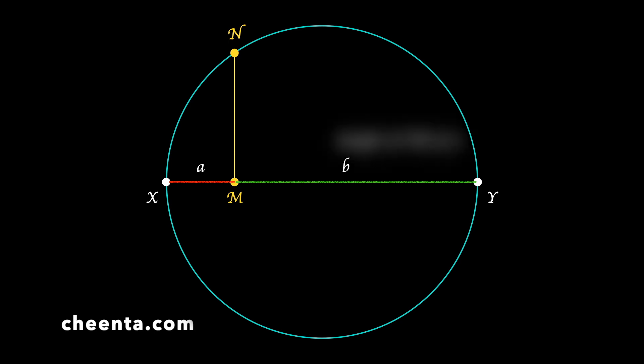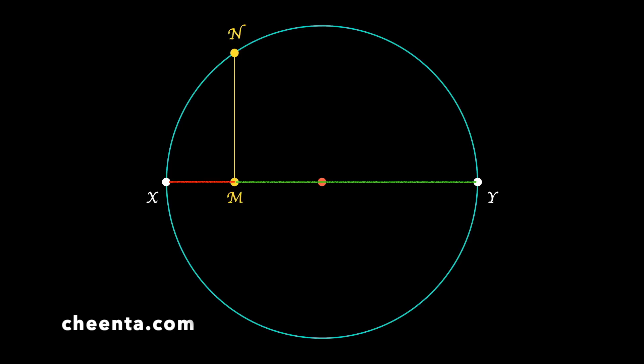Now we want to show that the length of MN is precisely square root of A times B. That is the geometric mean of A and B. That's the fun part. Let's come back to the picture and see how we can do this.